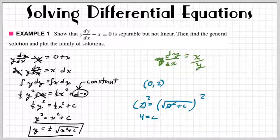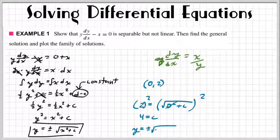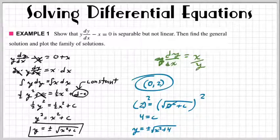So our exact solution is y equals plus or minus the square root of x squared plus 4. Now, could that 4 be different? Yes, but not when we're given a specific point, an initial value.